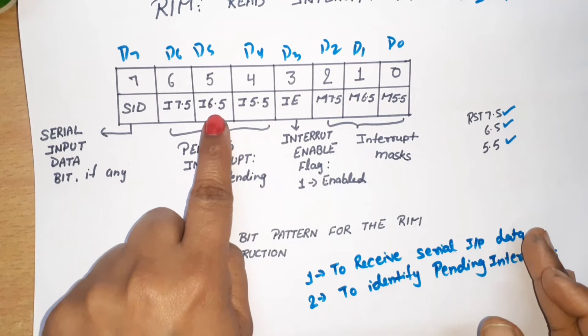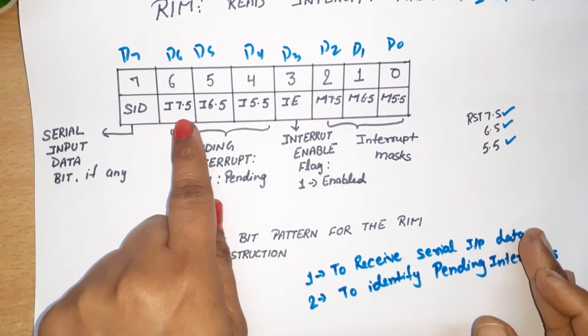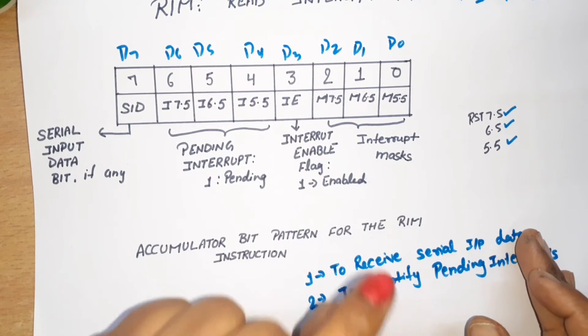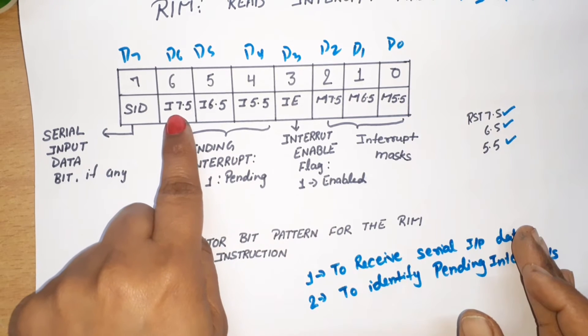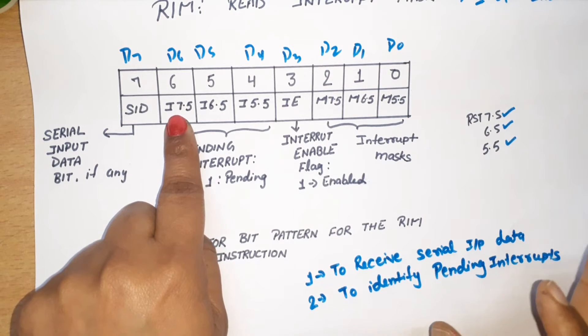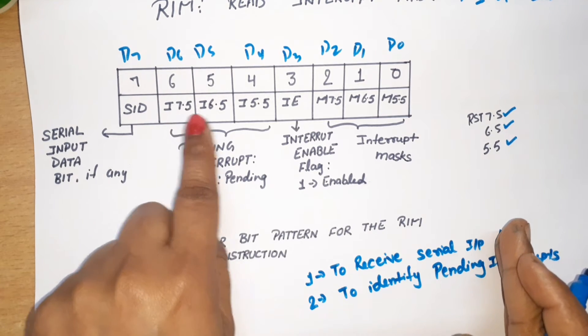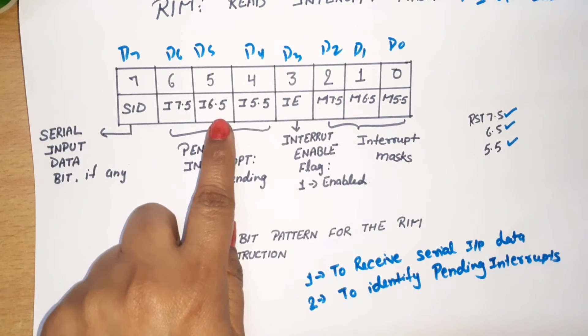This means that if at a time more than one interrupt is activated, the microprocessor will serve only one. One will be in service and the others will be in waiting state. Those interrupts are pending interrupts. So this will show the status: I7.5, I6.5, I5.5 show the pending status of RST 7.5, RST 6.5, RST 5.5 respectively. Whichever value is 1, that particular interrupt is in pending status. If I7.5 is 0, it's either served or not requested. If D5 bit is 1, it means RST 6.5 is in pending condition.